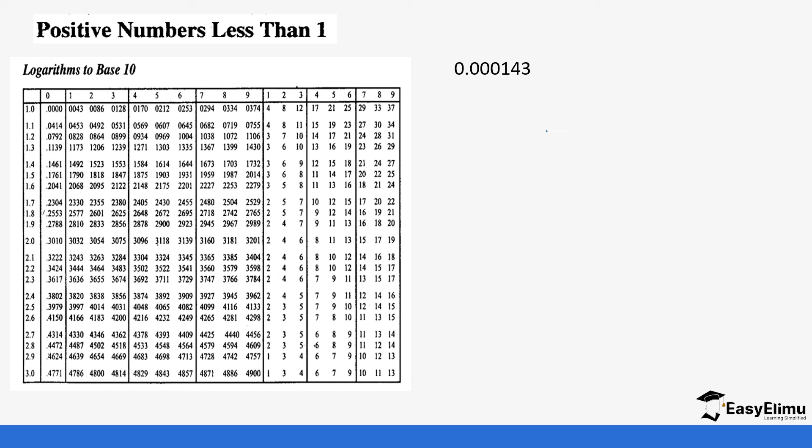Let's do a few more questions. We have 0.000143, so we move the decimal place 1, 2, 3, 4, so we get 1.43 times 10 to the power negative 4. We go to 1.43 which gives us 0.1553. This is the same as 10 to the power 0.1553 times 10 to the power negative 4, which gives us bar 4.1553.